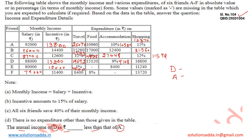First we need to find out the monthly income of persons A and D. The monthly income of D equals salary amount plus incentive amount. For D, the monthly salary is 88,000 and the incentive amount is 13,200. You can check these values from the table. By adding these values we get 1,01,200. This is the monthly income for one month.